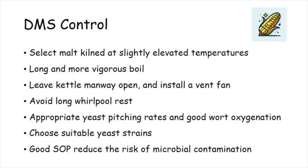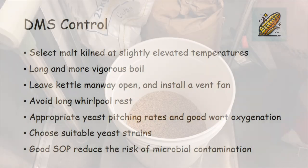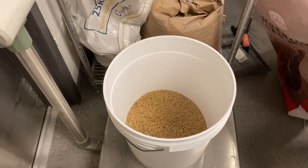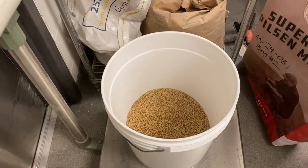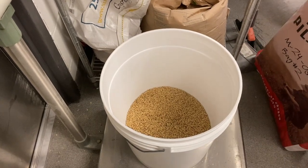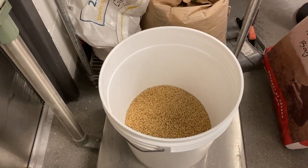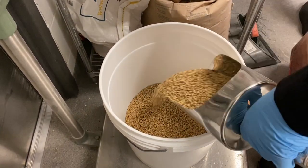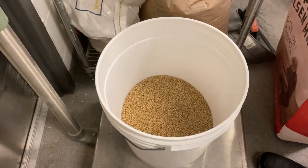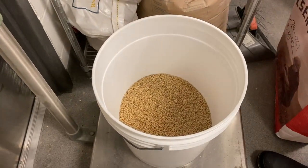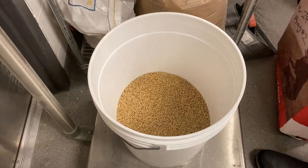DMS is a highly volatile compound and its levels in beer are controlled through several key methods. In order to reduce the precursor potential in the mash, brewers should select appropriate malt which is kilned at slightly elevated temperatures. Lightly kilned malt should be avoided if possible.